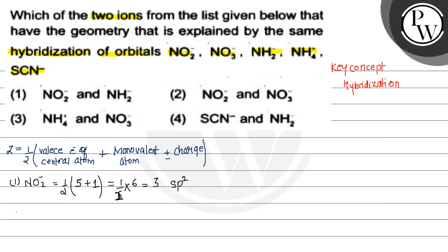The second ion is NH₂⁻: equals half the valence electrons of the central atom, plus 2 monovalent atoms, and there is a negative charge so we add 1. That gives us 5 + 2 + 1 = 8, and 8 ÷ 2 = 4. So the hybridization of NH₂⁻ is SP3.